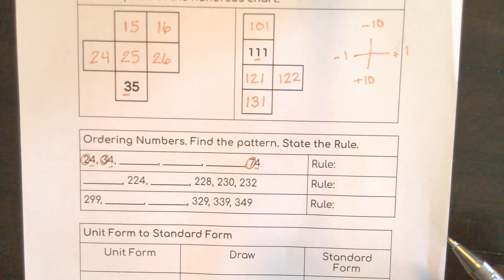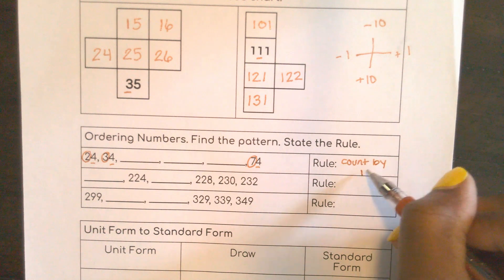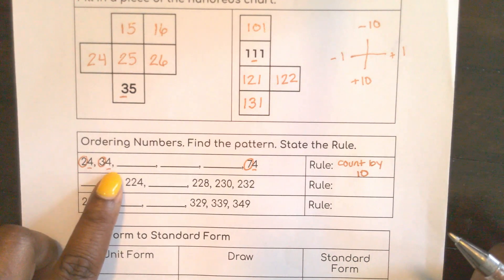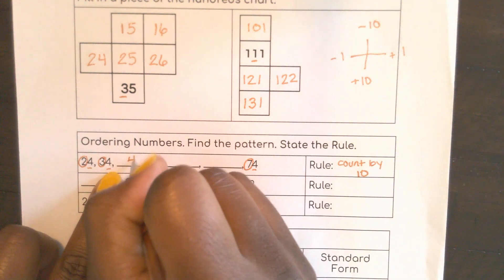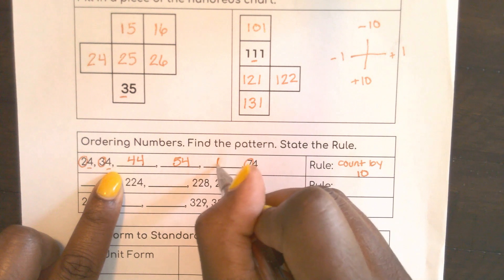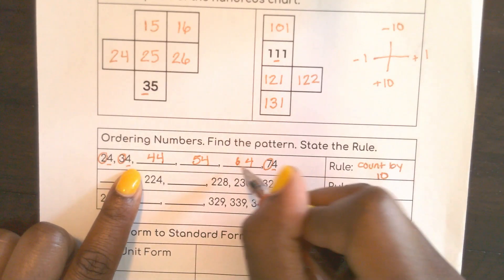Count by 10. So 24, 34, this will be 44, 54, 64, and of course 74.